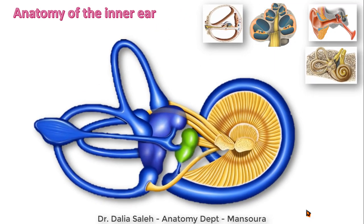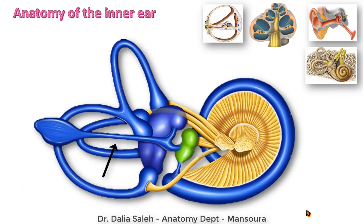Looking at the posterior aspect of the membranous labyrinth to see how its compartments communicate: we have the cochlear duct; in the middle, the saccule connected to the cochlear duct by a small duct called the ductus reuniens. The utricle is a larger structure connected to the saccule by a Y-shaped duct. They unite to form the endolymphatic duct, which terminates at the endolymphatic sac. Then we have the three semicircular canals, each with an ampullated end and a non-ampullated end, opening by five openings into the utricle.